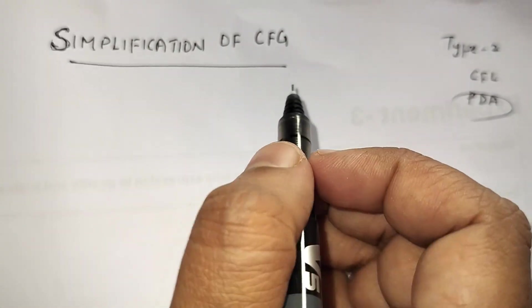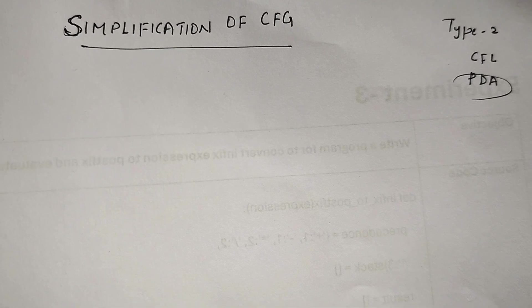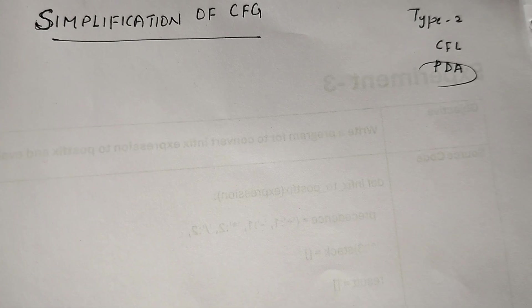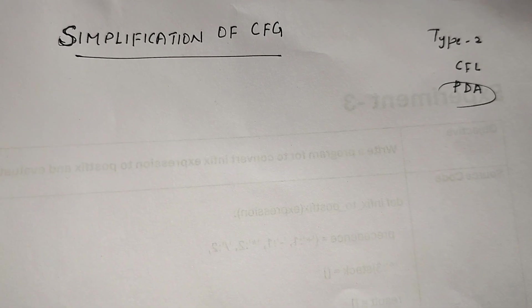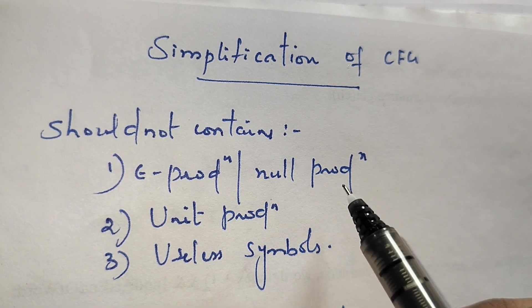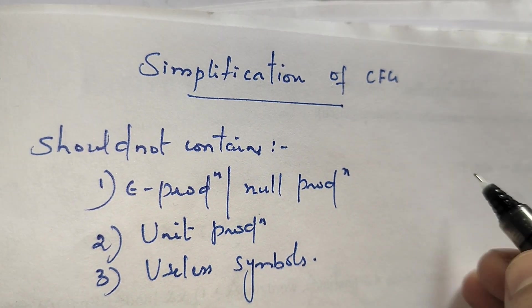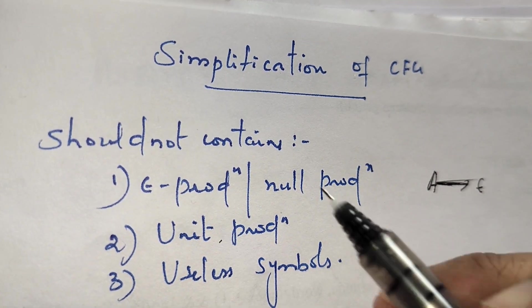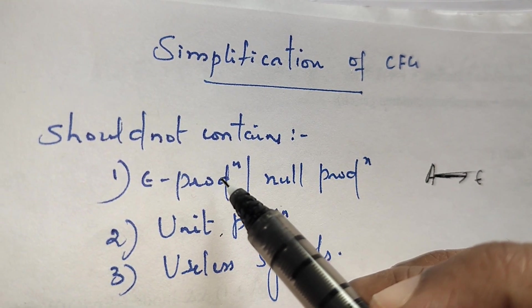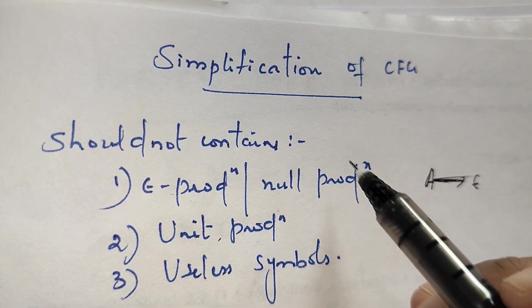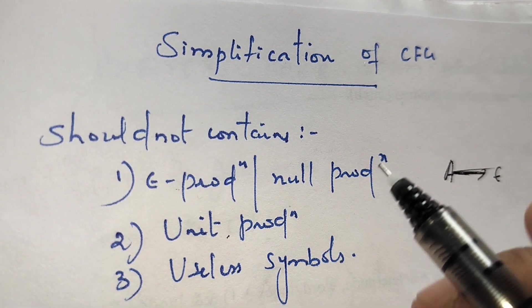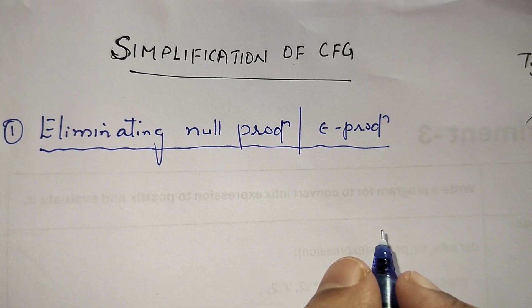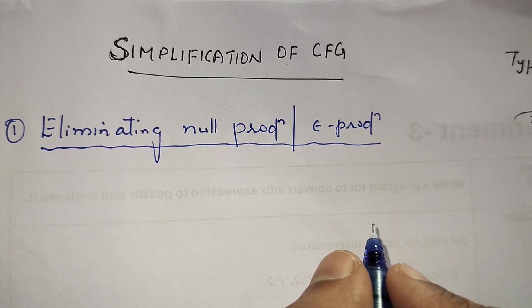In simplification of context free grammar, I will explain how to simplify a given context free grammar. A context free grammar should not contain epsilon productions (also known as null productions), unit productions, or useless symbols. In this video I will explain how to eliminate epsilon or null productions from a given context free grammar.